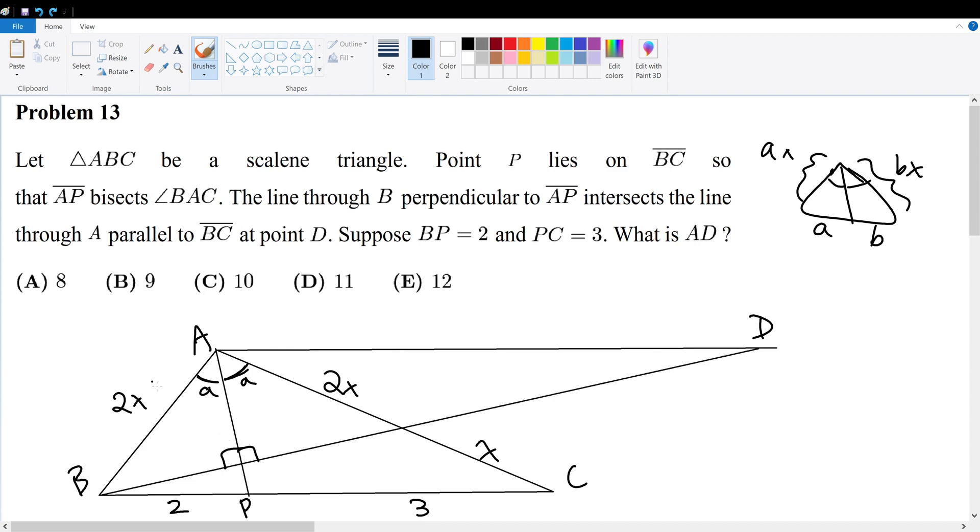Therefore this is an isosceles triangle. Therefore 2x here must go all the way here as well. But from the angle bisecting theorem, we know that this must be 3 in order for the 2 to 3 ratio to be present, so this is x.